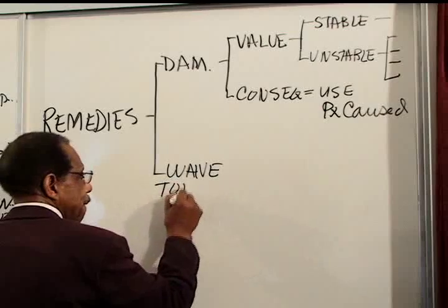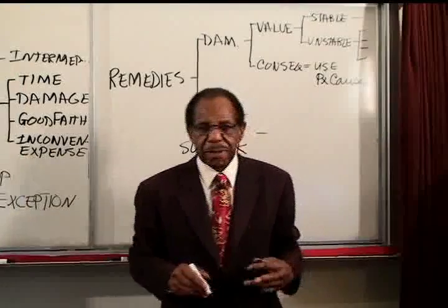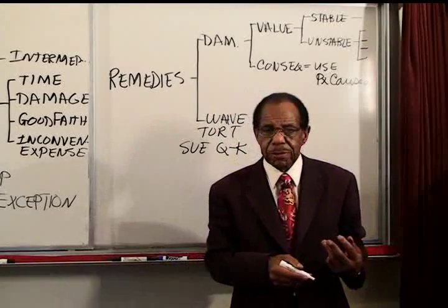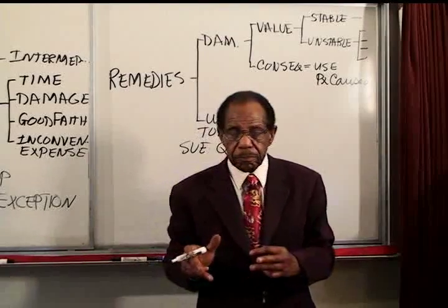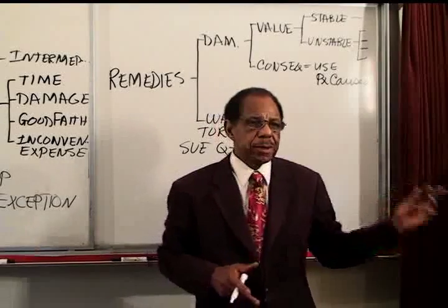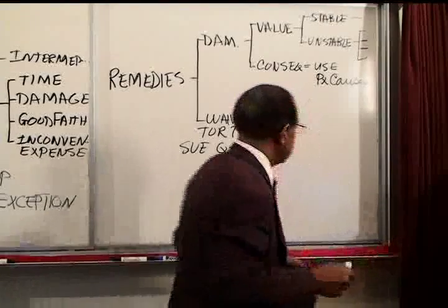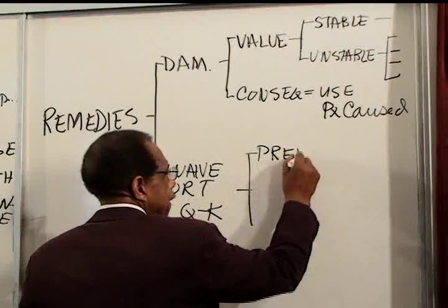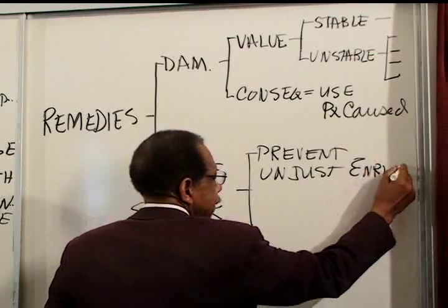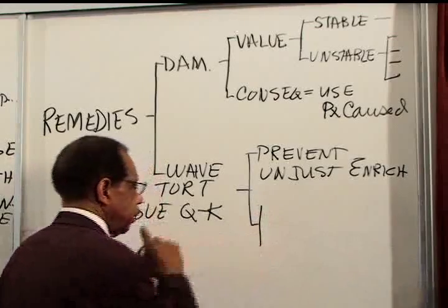Then comes the final case where you want to waive the tort and sue in quasi-contract. This is the case where the diamond is now worth $2,000 instead of $1,000 at the time of conversion. You don't want the thief to keep $2,000, so you say: forget about suing for the value of the diamond at the time and place of conversion. Instead, you treat this thief as though they were selling it on your behalf and they got $2,000 — give it to me. We do that to prevent the person's unjust enrichment.